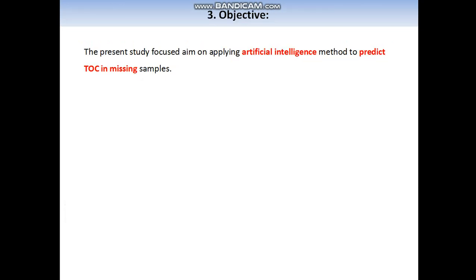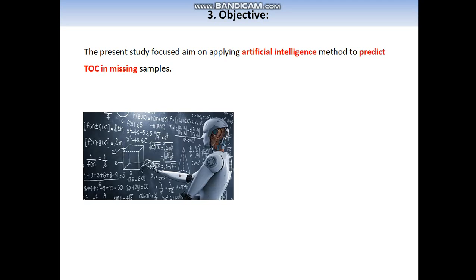The present study focuses on applying artificial intelligence methods to predict TOC in missing samples. The method suggests the use of available real TOC observations and geophysical logging.